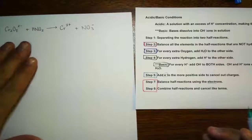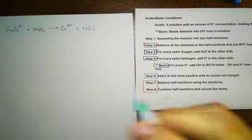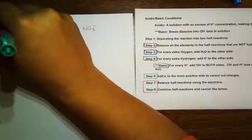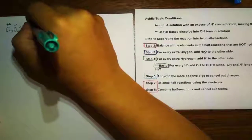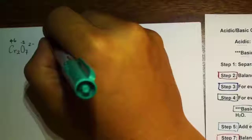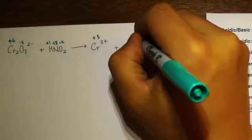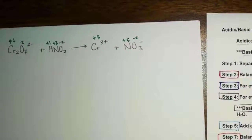Now let's try a more challenging problem. We have this chemical reaction that needs to be balanced in acidic solution — the problem will tell us that. The very first thing we do is assign the oxidation numbers: S is −2, Cr is +6, H is +1, O is −2, and Cr on the product side is +3. Then we have N at −2 and +5 as well. If you have difficulty assigning oxidation numbers, please go back and review that specific video.